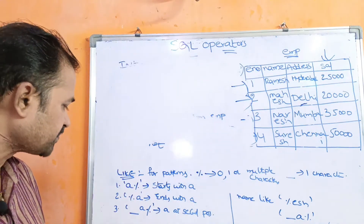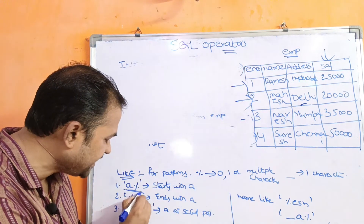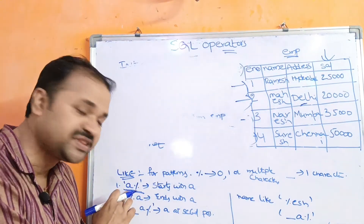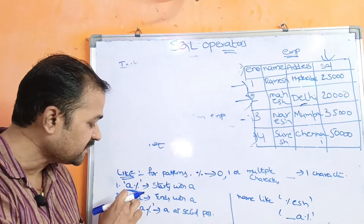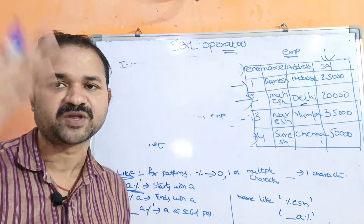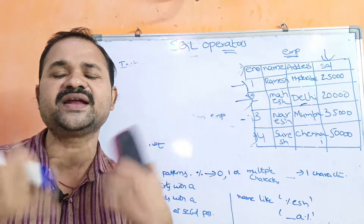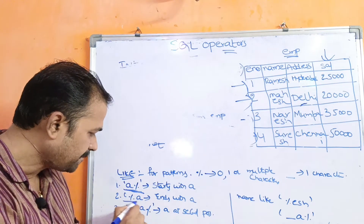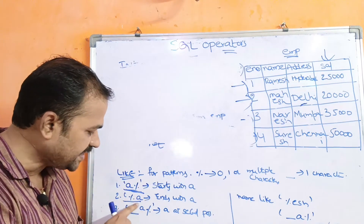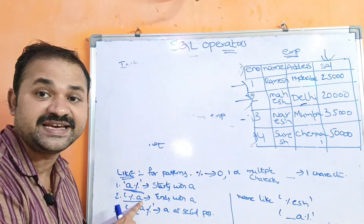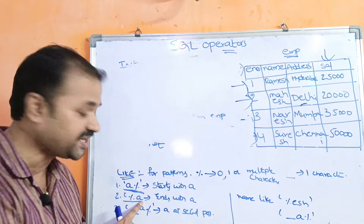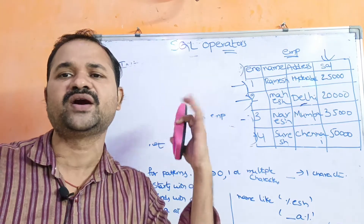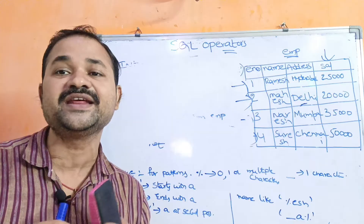Let us see an example. Within the single quotation, 'a%' displays records where the string starts with 'a', and after 'a' we can have any number of characters — one character, two characters, or three characters. Another example: '%a' displays records where the string ends with 'a'. Before 'a' we have percentage, meaning zero or any number of characters.